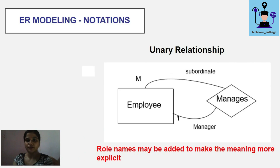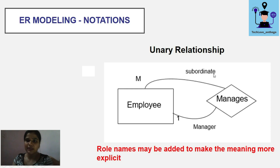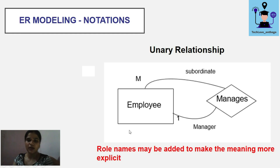A unary relationship is represented as a diamond connected to one entity with a loop back to itself. Role names can also be described with relationships — for example, 'subordinates' and 'manager' — to make the meaning more explicit and understandable.